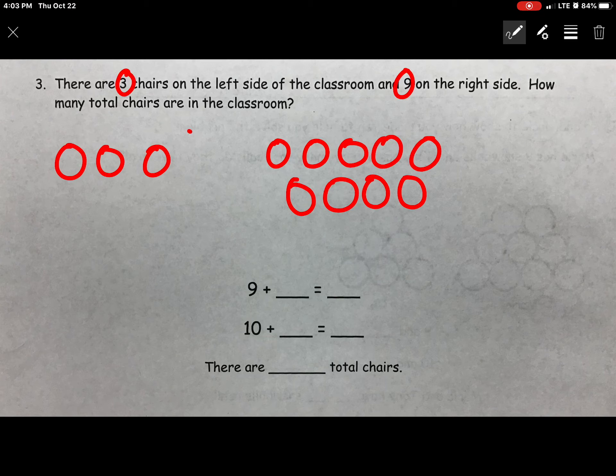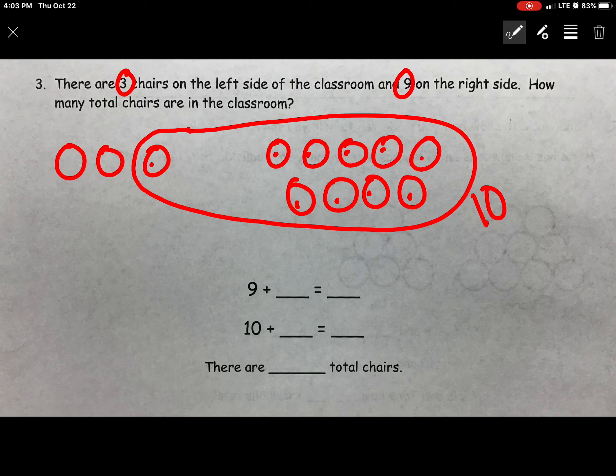I'm going to take 1 from my first group and add it to the 9 in my second group. And then I'm going to quickly make sure that I circled the right amount. 1, 2, 3, 4, 5, 6, 7, 8, 9, 10. And now I label it. 9 plus 1 equals 10. I've accounted for my group that I circled.